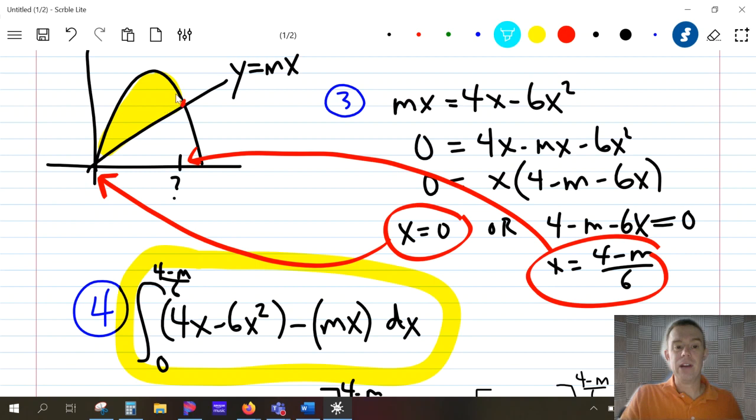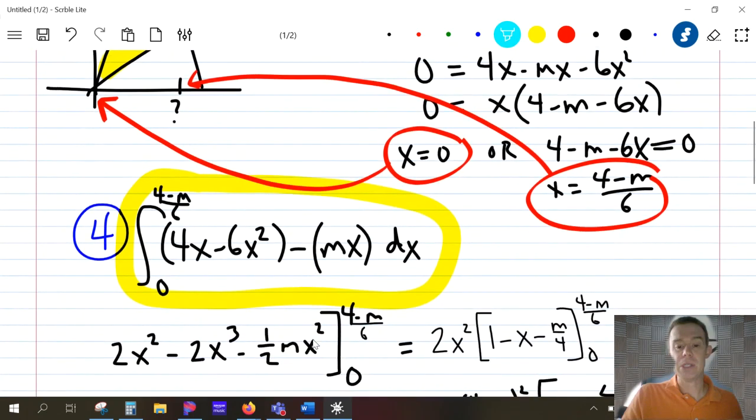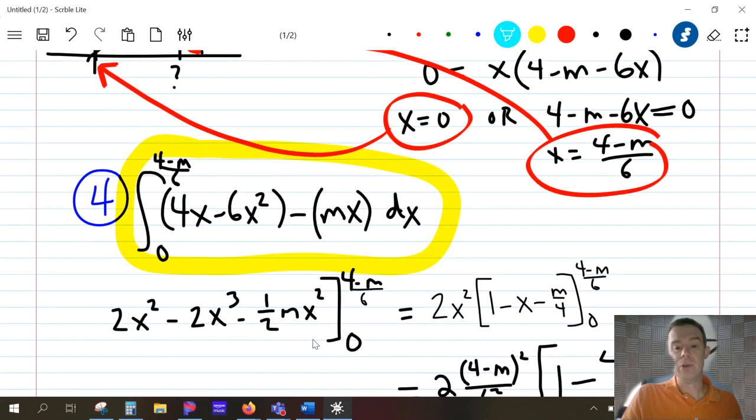And again, I'm integrating this yellow area. So it's the parabola or the quadratic equation minus the linear equation. So there's the quadratic equation minus the linear equation. This is my fourth step. I'm trying to find that yellow area. Now, remember that yellow area eventually is going to equal 4/27. But before I get there, I want to get an expression for what this area represents. So I'm going to integrate, I'm going to use the power rule again. And when I use the power rule, I get this. And then I just need to apply these two limits of integration.